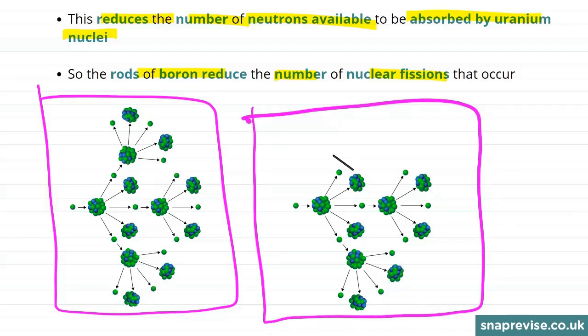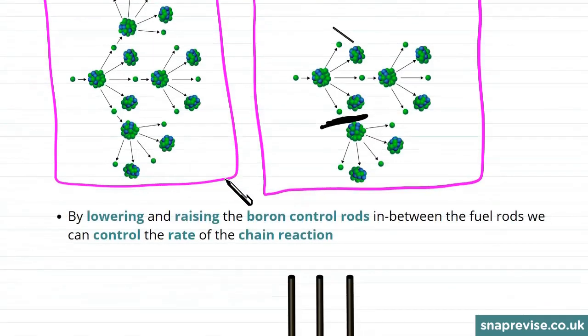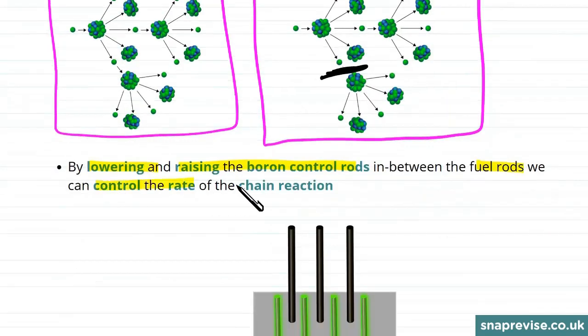If we wanted each reaction to cause just one more reaction, then maybe we would need to put more boron rods in. Rather than putting more or less boron rods in, a different way to think about it is we could lower and raise the boron rods in between the fuel rods to control the rate of reaction.